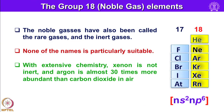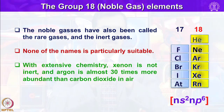The noble gases have also been called rare gases and inert gases. Now, none of the names appear particularly suitable with extensive chemistry — xenon is not inert, and argon is almost 30 times more abundant than carbon dioxide in air.